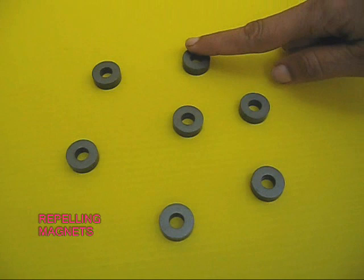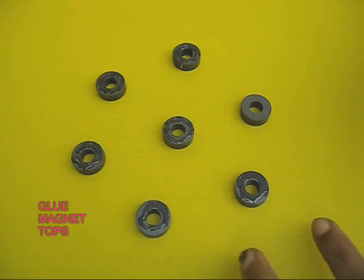Here are these magnets which are arranged in repelling orientation. If you bring the ones on the side they repel the central one.